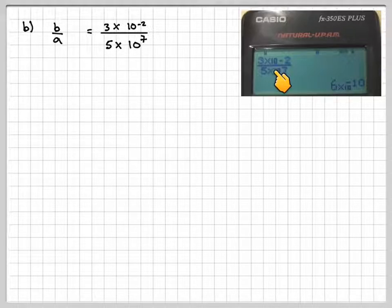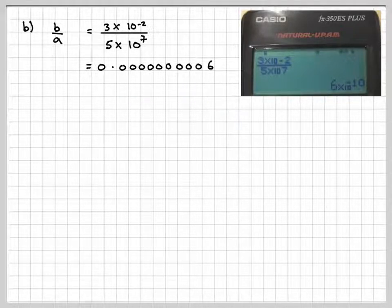It's actually the same before using the fraction button. Now, this calculator actually gives you the answer in standard form. So it's 6 times 10 to the minus 10. However, some calculators will just give you the decimal answer like this.